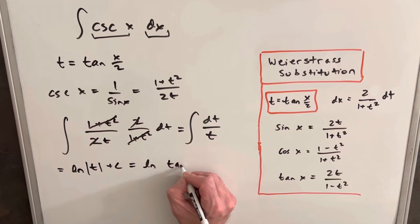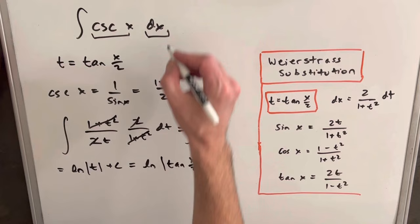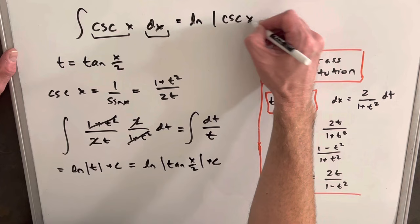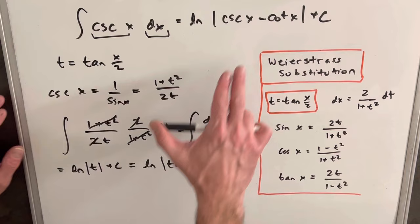Now, the problem here is you may know that this integral, the value of this, it's a well-known integral, is cosecant x minus cotangent x plus c. And so the problem we have now is this is not this, or it doesn't appear to be.